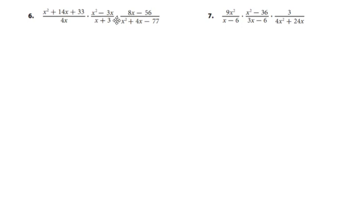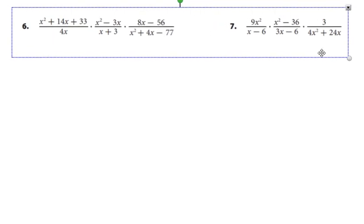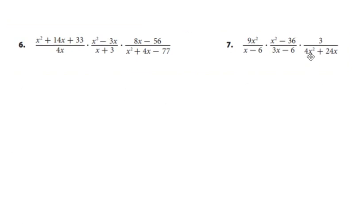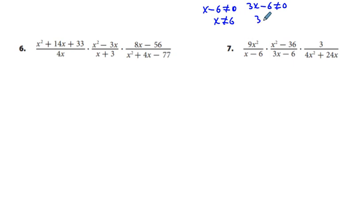Next, problem 7. We can see there are more complications here. I'm going to work the exclusions first. We know that x minus 6 cannot equal 0, so x cannot equal 6. And 3x minus 6 cannot equal 0 — solving, 3x cannot equal 6, so x cannot equal 2.